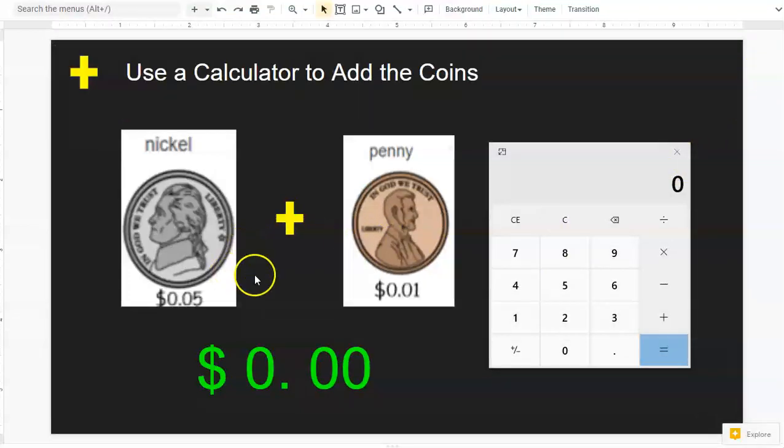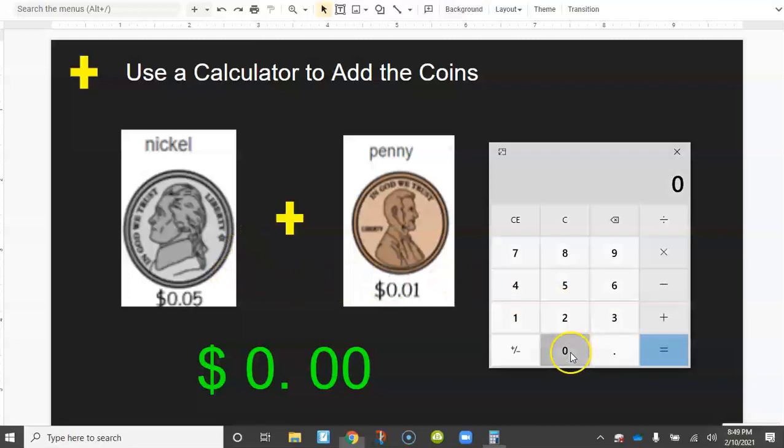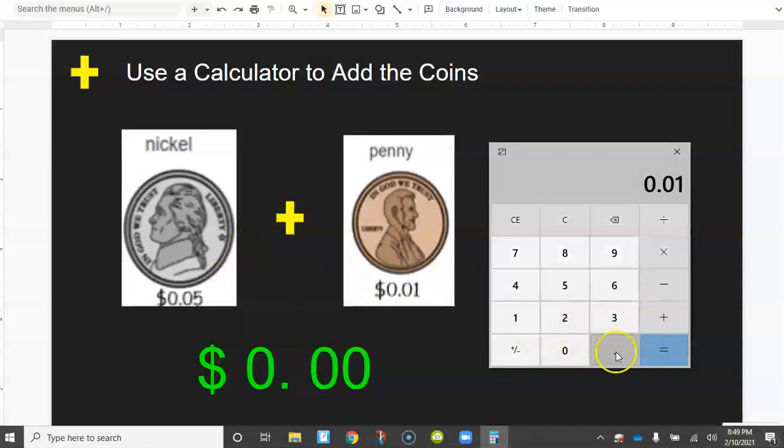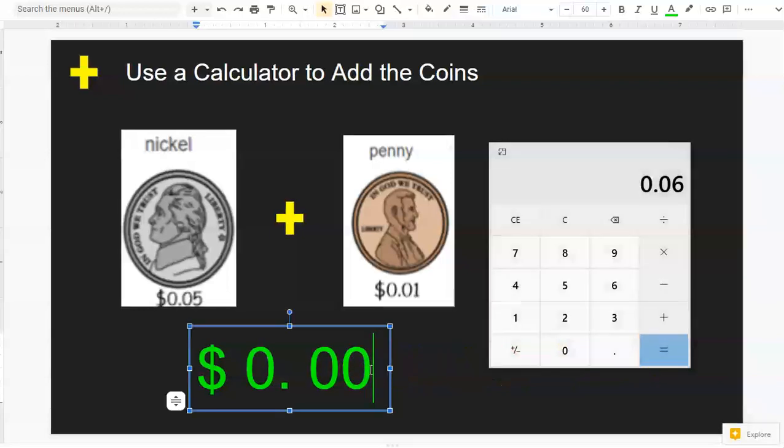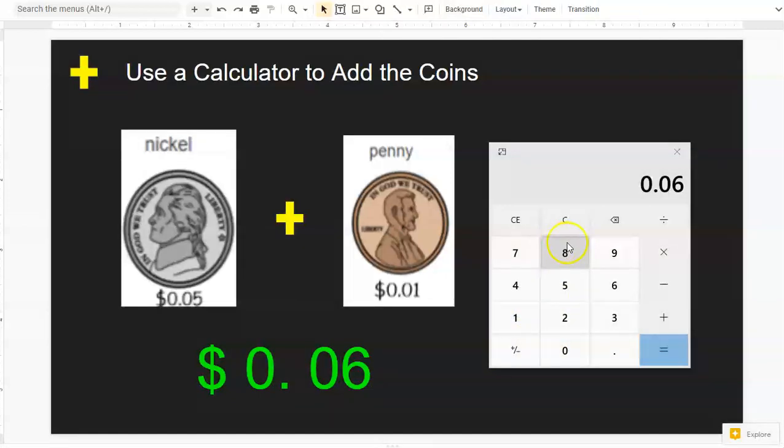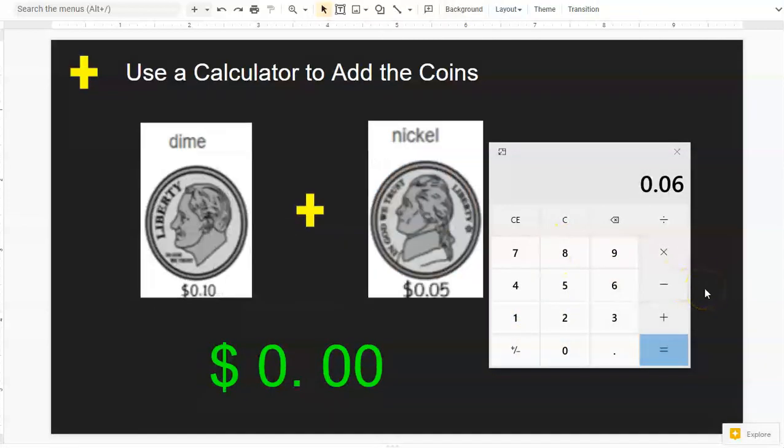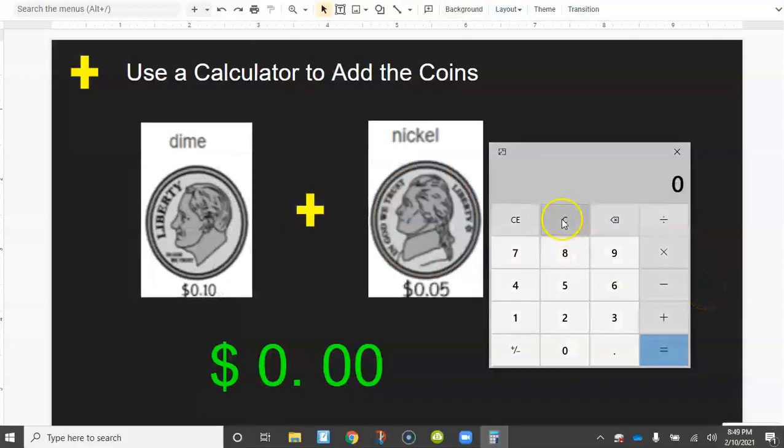Now I can go ahead and use my calculator—0.05 plus 0.01 equals—to do my activity. When I click into the slide to update the answer, nothing changes. When I change from slide to slide, all I have to do is clear my calculator and do it again.